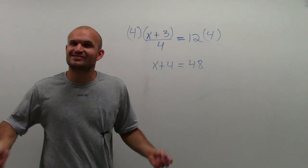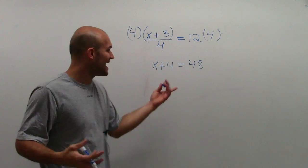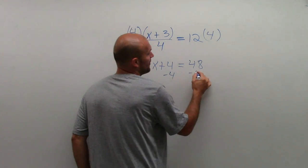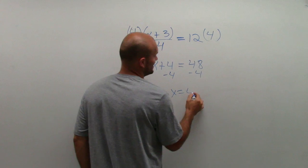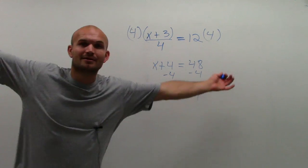So now I just have a one-step equation. You're like, yeah, I got a one-step equation. I can solve this. Subtract 4 on both sides. x equals 44. Done.